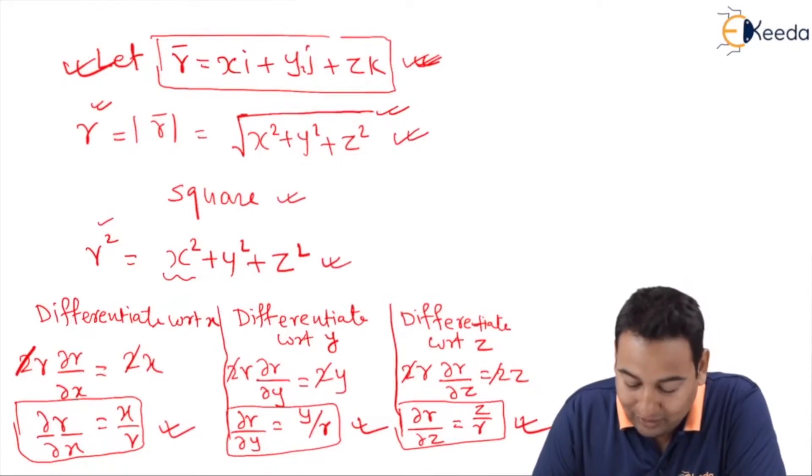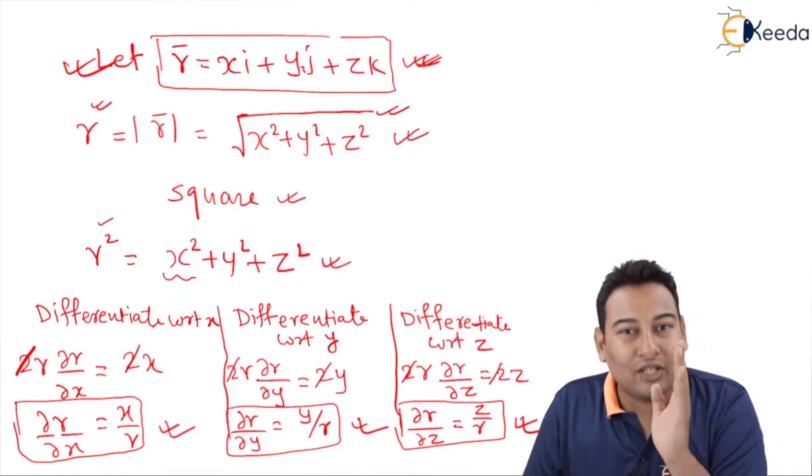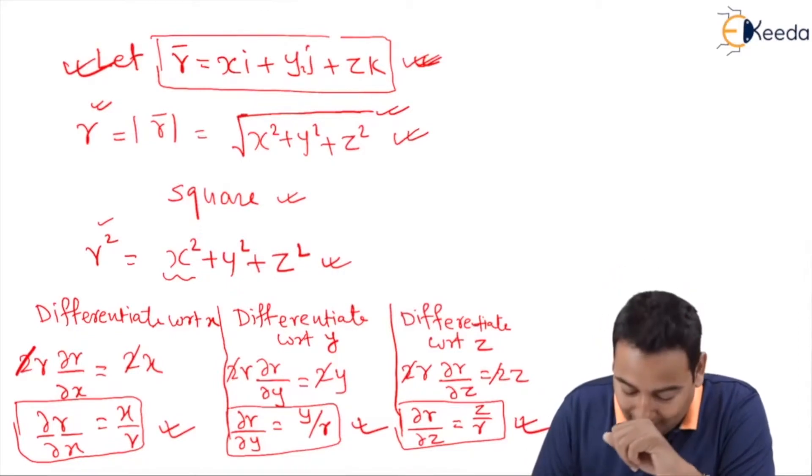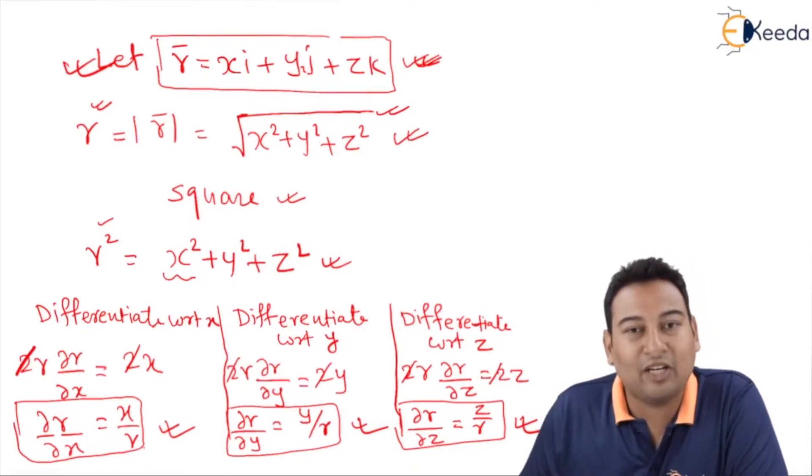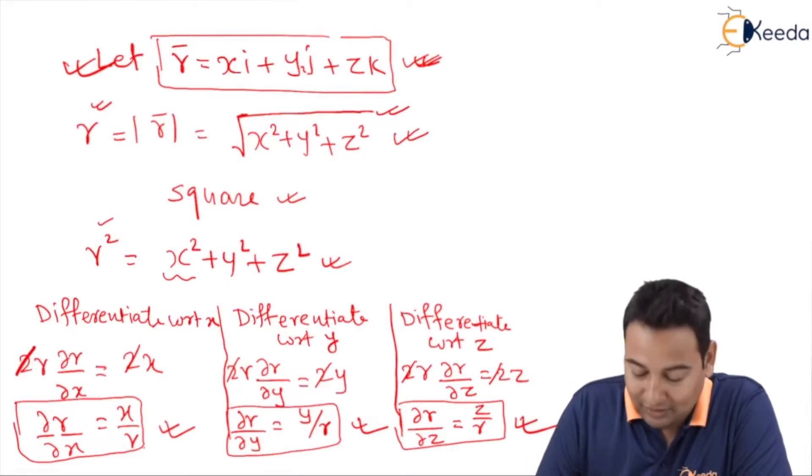This step we're going to square, we're going to get this. I'm going to differentiate with respect to x, y, and z, and I'm going to get this: x by r, y by r, and z by r. These steps will be the same for this particular problem, so in the exam we're going to write all the entire steps again.